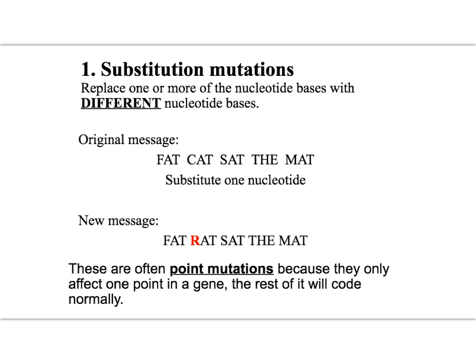In a substitution, one nucleotide base is replaced with another. Using an analogy rather than the normal ATCG bases, in the original DNA sequence we've got 'fat cat sat,' but in the new message we've changed 'cat' to 'rat' — we've substituted C with R. That would mean this amino acid after protein synthesis could be different, because it codes for a different triplet, giving a different primary structure.